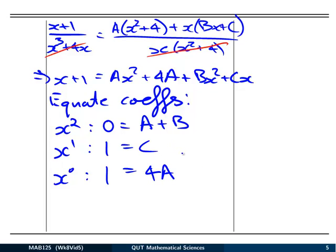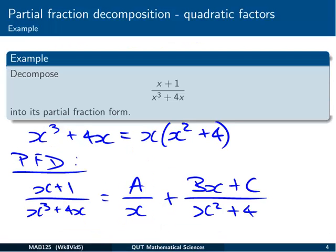So two of those we've got already, we already know c is equal to 1 from the second equation, a must be equal to 1 quarter from the third equation, and that then tells us that b must be equal to minus 1 quarter. So we can put those all back together again into our partial fraction decomposition, and we can finish this one off.